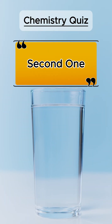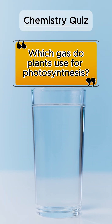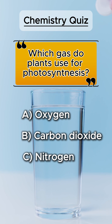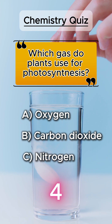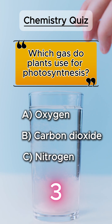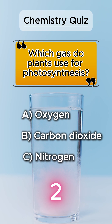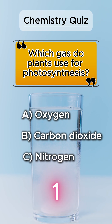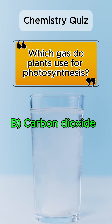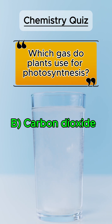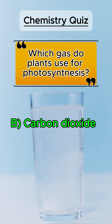Second one. Which gas do plants use for photosynthesis? Answer B, carbon dioxide.